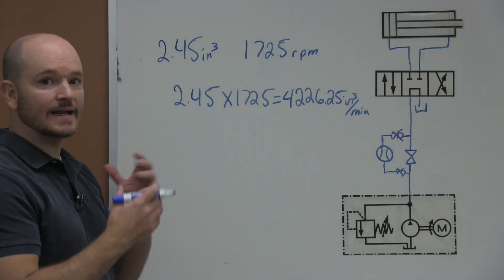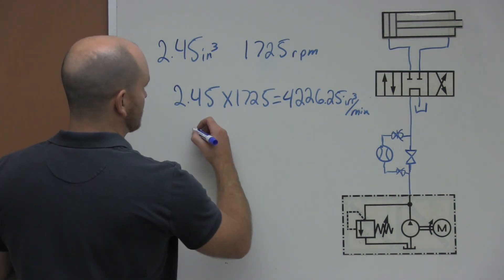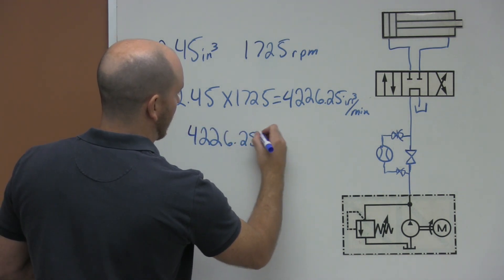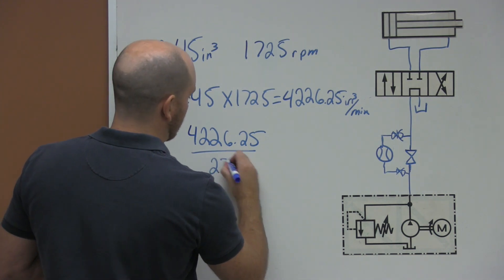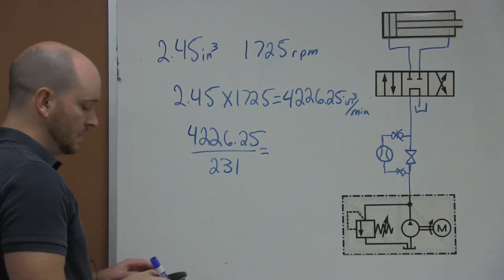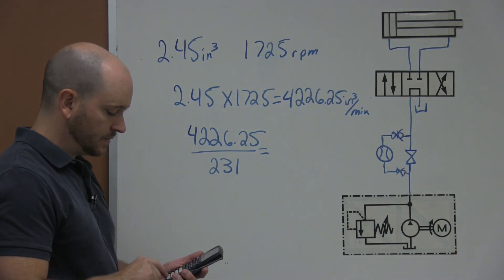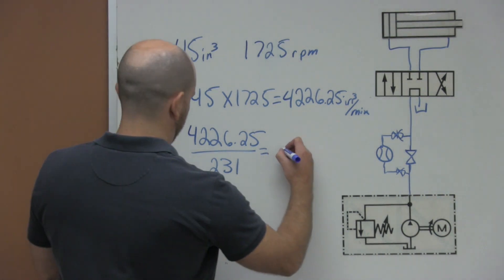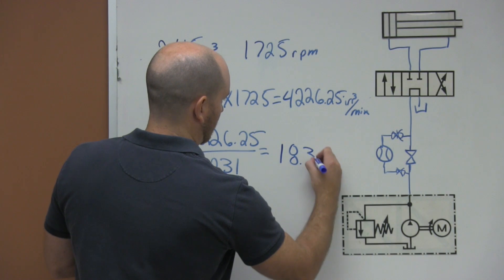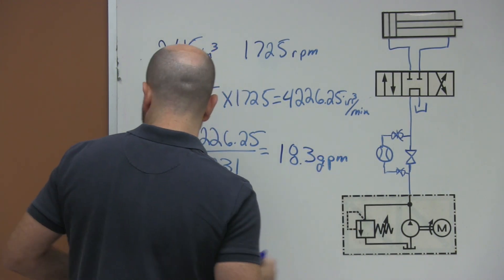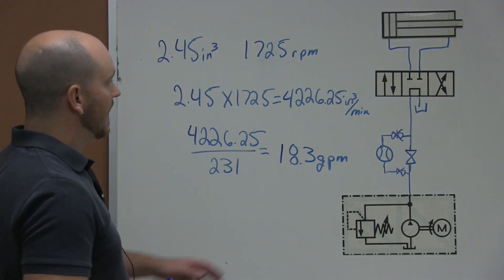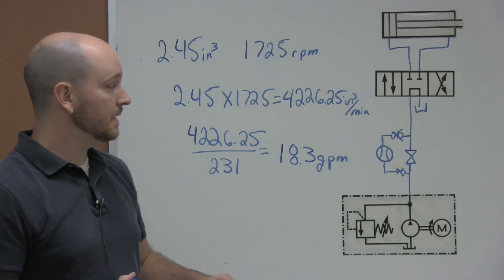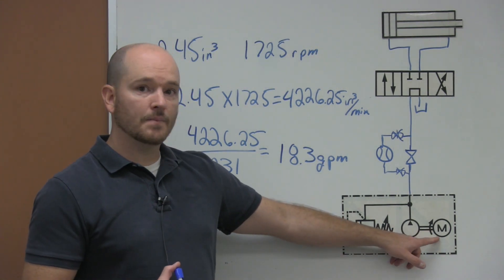Then we need to get that into gallons per minute. So we take that value of 4,226.25 and divide it by 231. So we get our calculators out: 4,226.25 divided by 231 equals roughly 18.3 gallons per minute. This is how you calculate the theoretical gallons per minute that a pump can provide given the RPMs of the motor.